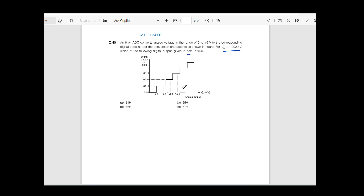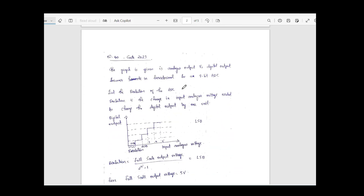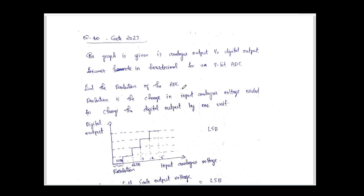We will see how we can find the answer. In the graph, the X-axis gives the digital output and the Y-axis gives the analog input voltage. Since the output is digital, it will have step values, not continuous values. If the input is analog and continuous, this will be its corresponding digital output.